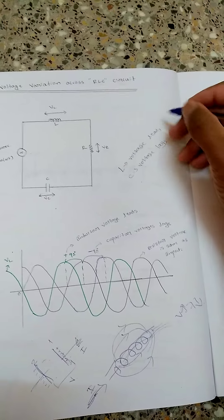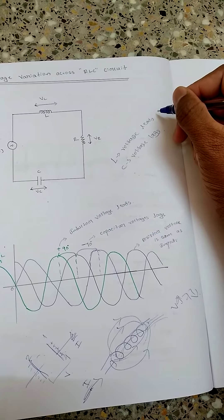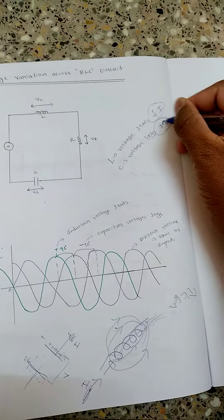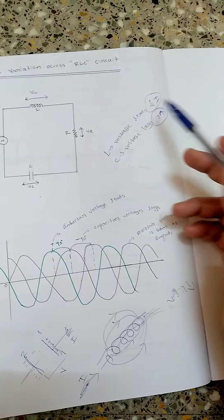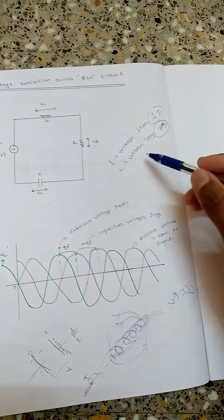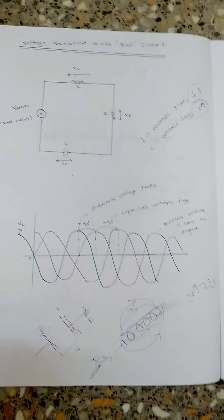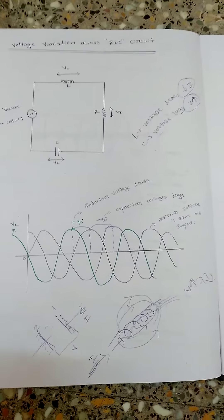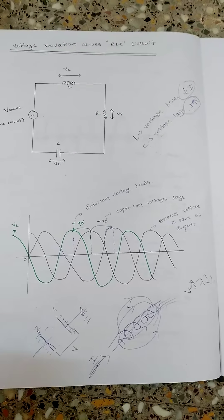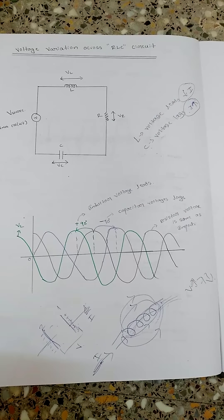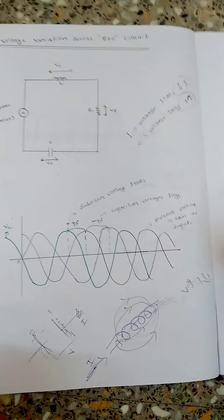Since voltage lags in the capacitor, current will be leading. Voltage lags means current leads; voltage leads means current lags. So in the case of a capacitor, current leads and voltage lags. For resistors, both voltage and current increase or decrease linearly and simultaneously with the source voltage, without any phase shift. These are the two properties due to which capacitor voltage lags and inductor voltage leads.